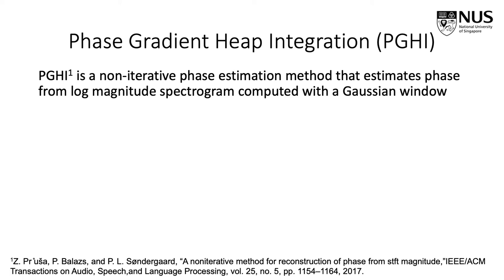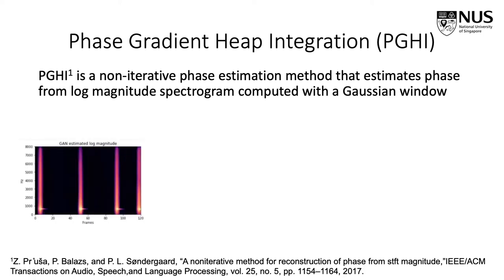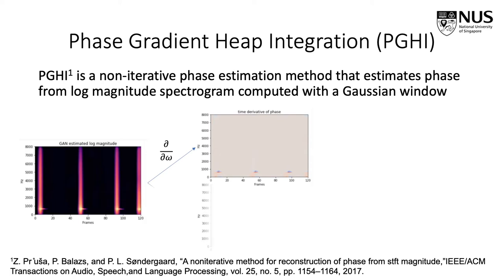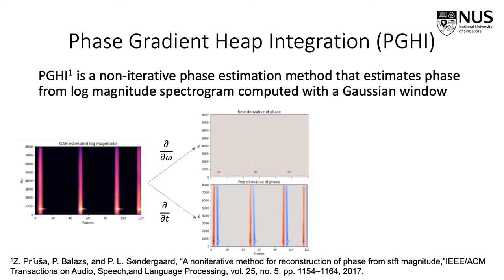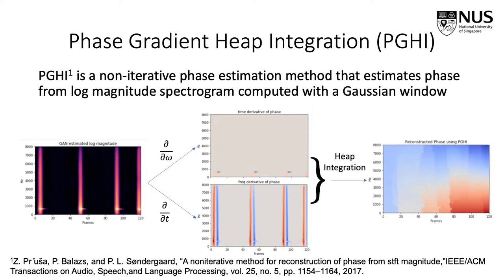PGHI estimates the phase from the log-magnitude spectrogram when computed with a Gaussian window. Rosa and authors showed that the derivative of the log-magnitude spectrogram with respect to frequency can be used to mathematically compute the derivative of phase along the time axis. Similarly, the derivative of the spectrogram along the time axis can be used to compute the derivative of phase along the frequency axis. Using these phase gradients, the phase of the signal can be estimated using a heap integration technique — a numerical integration performed along the most prominent contours of the spectrogram — making phase estimation and time domain signal synthesis more robust to estimation errors and noise.